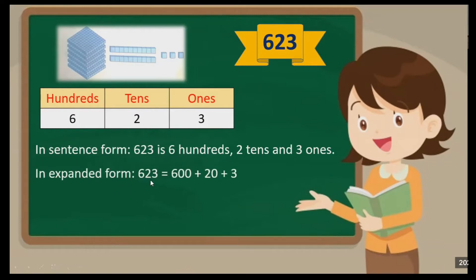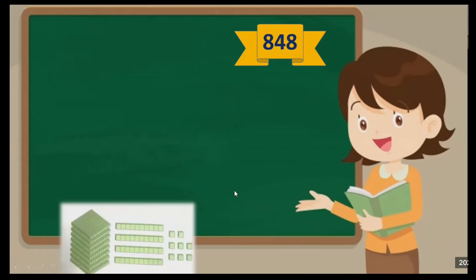If we expand the number 623, it becomes: 600 plus 20 plus 3. That is how to write it in expanded form. In sentence form, you write: 6 hundreds, 2 tens, 3 ones. Don't forget to write the letter S — hundreds, tens, ones.